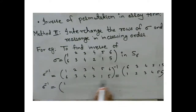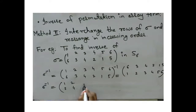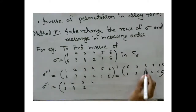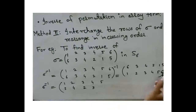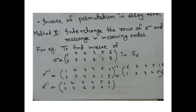After rearranging in increasing order: 1 goes to 5, 2 goes to 4, 3 goes to 2, 4 goes to 3, 5 goes to 6, and 6 maps to 1. This is the resulting permutation for sigma inverse in array form.